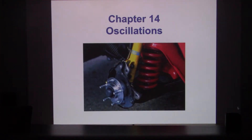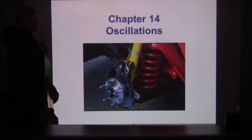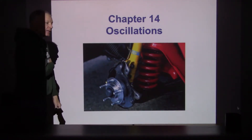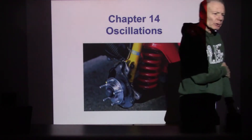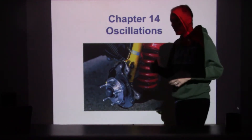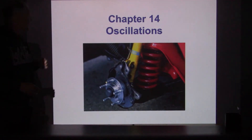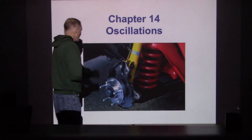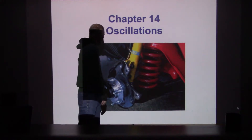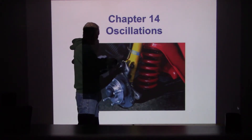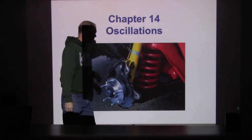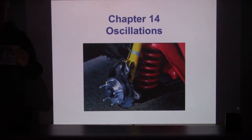Good morning. We're moving on to another chapter - oscillatory motion. Oscillatory motion involves something oscillating back and forth. The example at the beginning of the chapter shows a spring inside an automobile suspension system, so that spring can oscillate back and forth. We'll look at the basics first - this looks kind of like a complicated mechanical system to start out with.